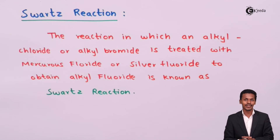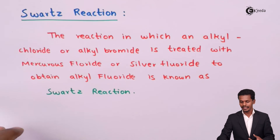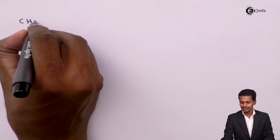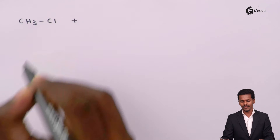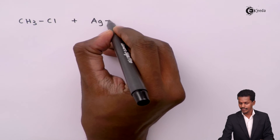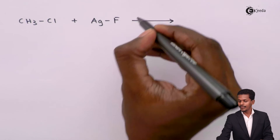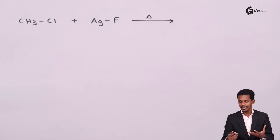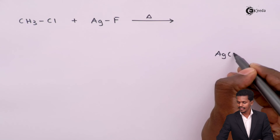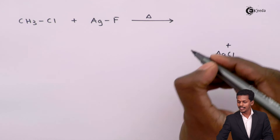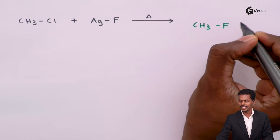Let me introduce a general example. If we use CH3Cl along with silver fluoride (AgF), the Ag removes Cl and they are eliminated as AgCl, and the product obtained is CH3F, also known as fluoromethane.